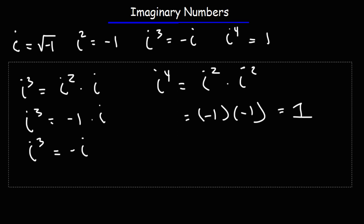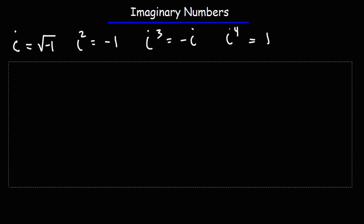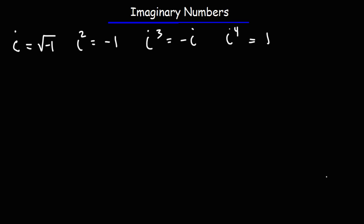With that in mind, how would you simplify these imaginary numbers? Let's say if you have i to the seventh power, i to the 26th power, i to the 33rd power, and i to the 43rd power. Go ahead and try these.